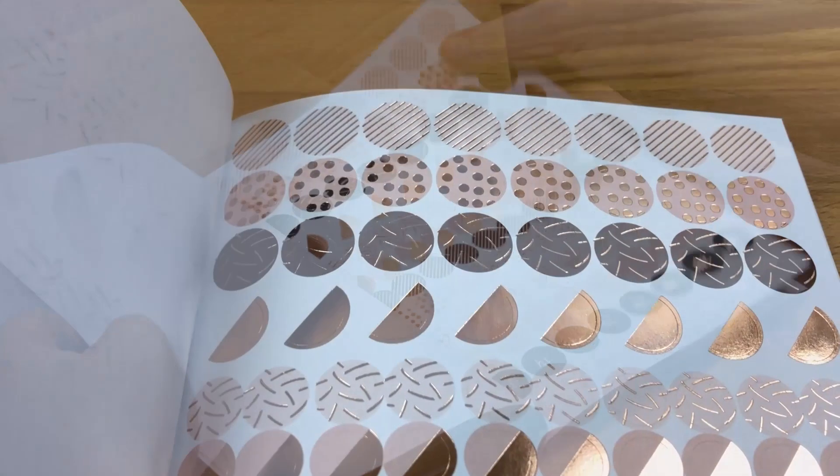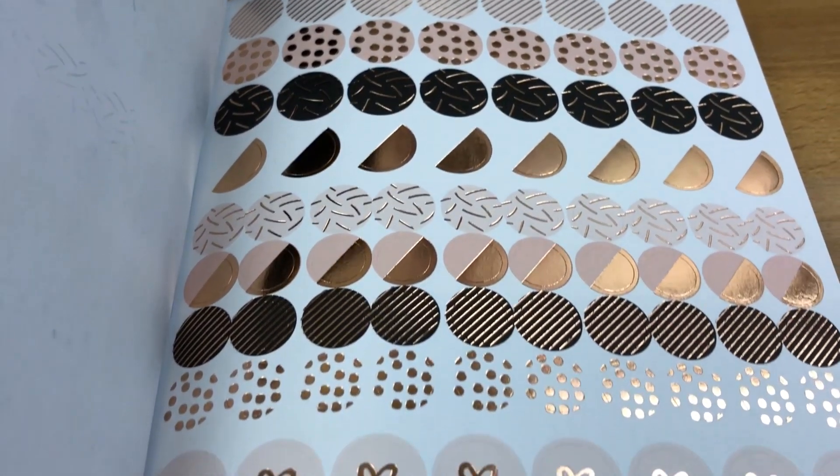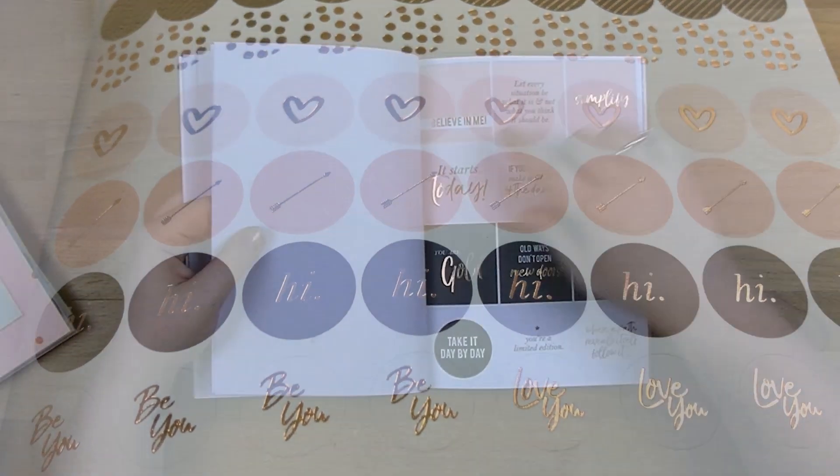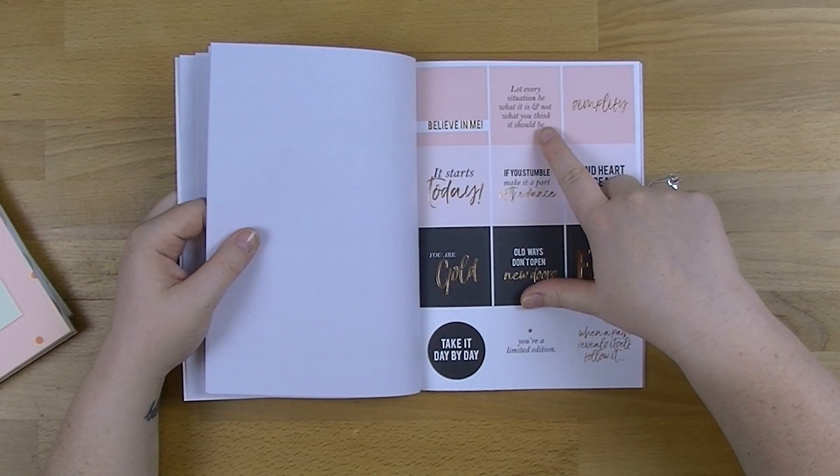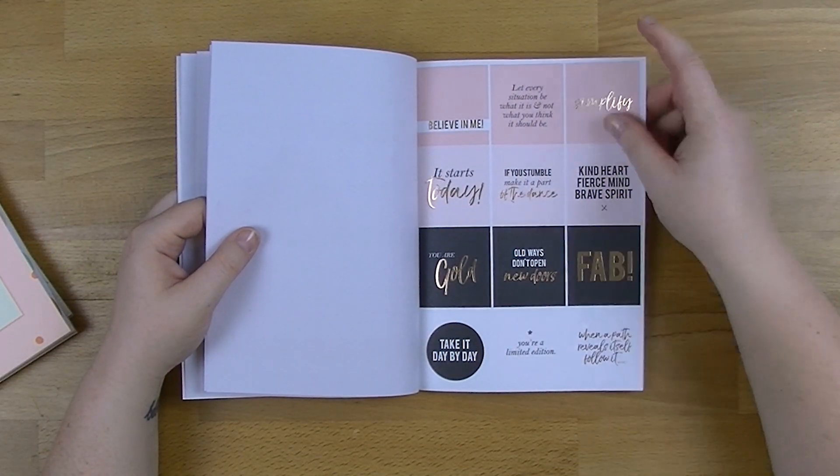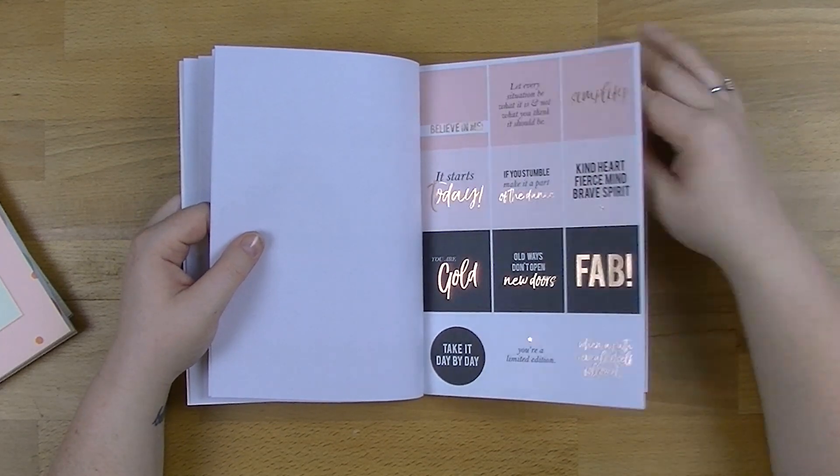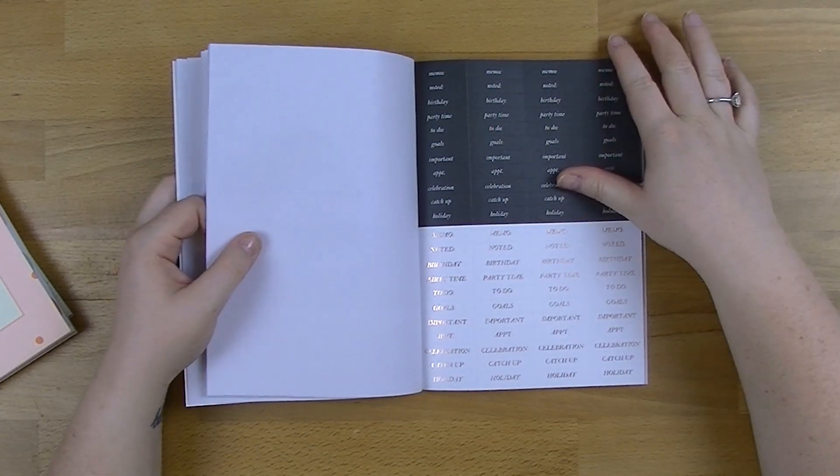Be you. So you've got some more there with the half circles. They all have a rose gold metal to them. Believe in me, let every situation be what it is and not what you think it should be. That's beautiful. If you stumble, make it part of the dance. That's a good one too. I like those ones.